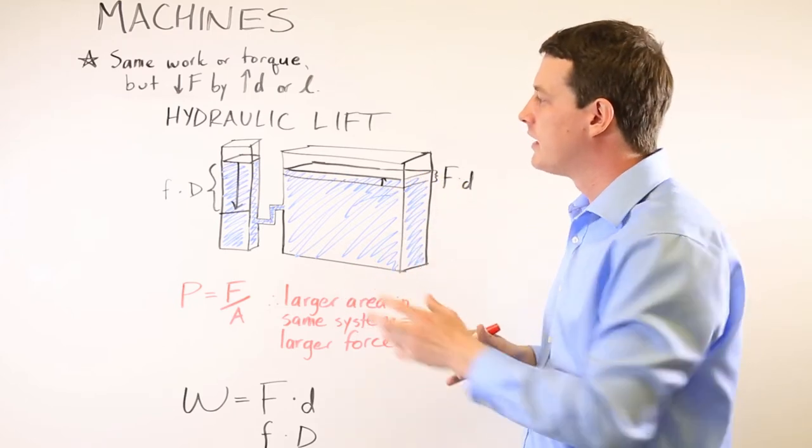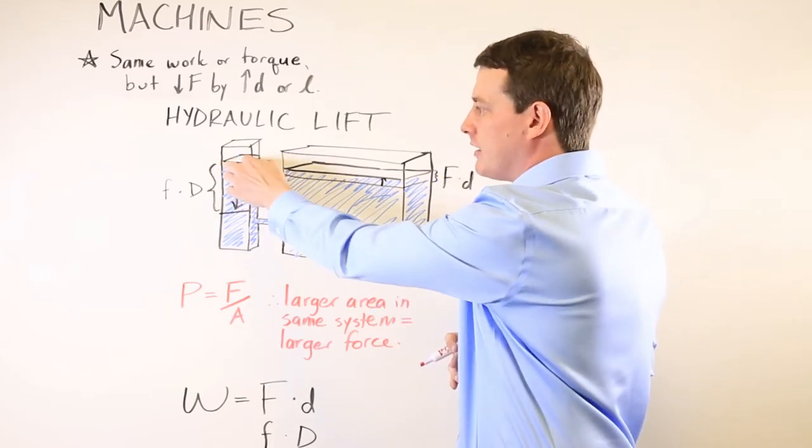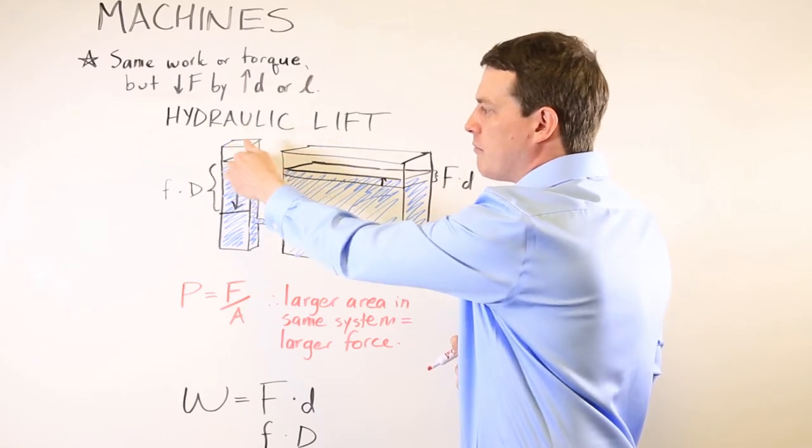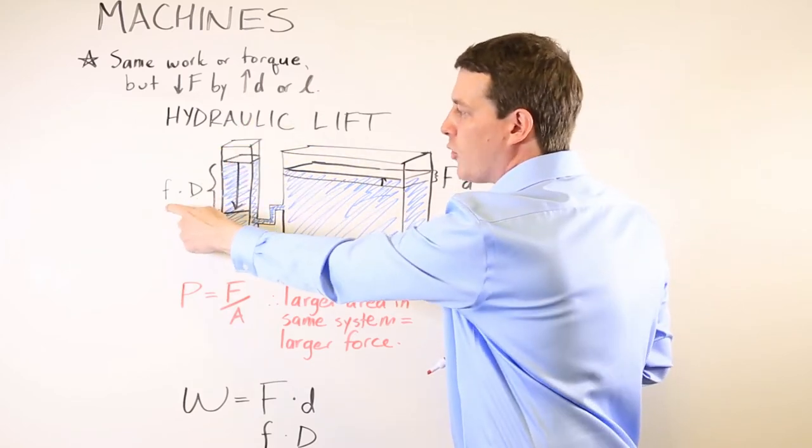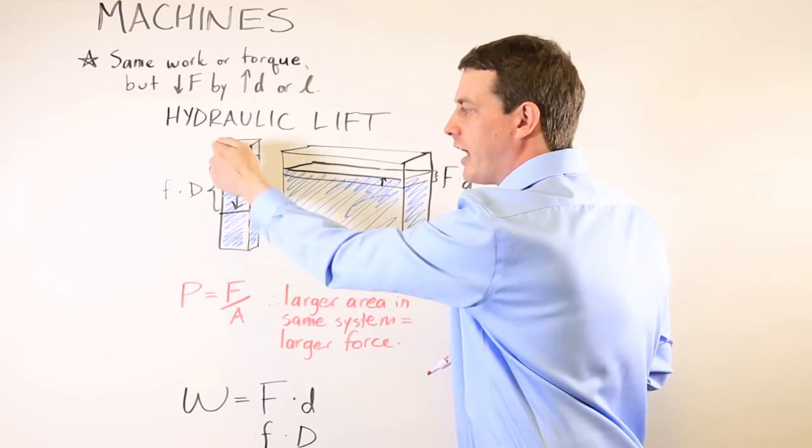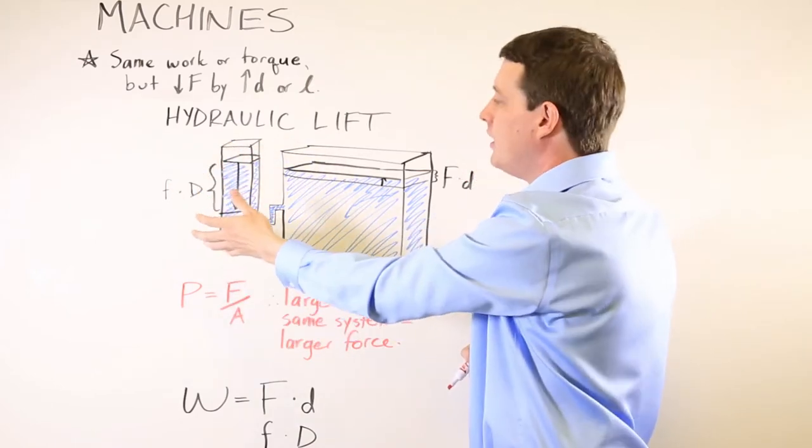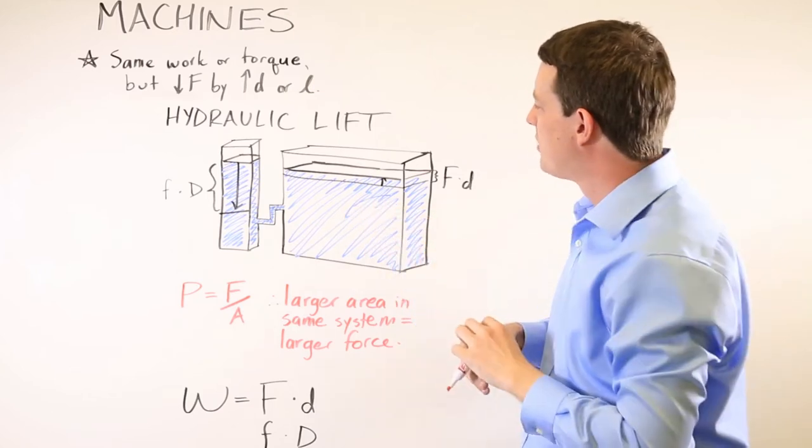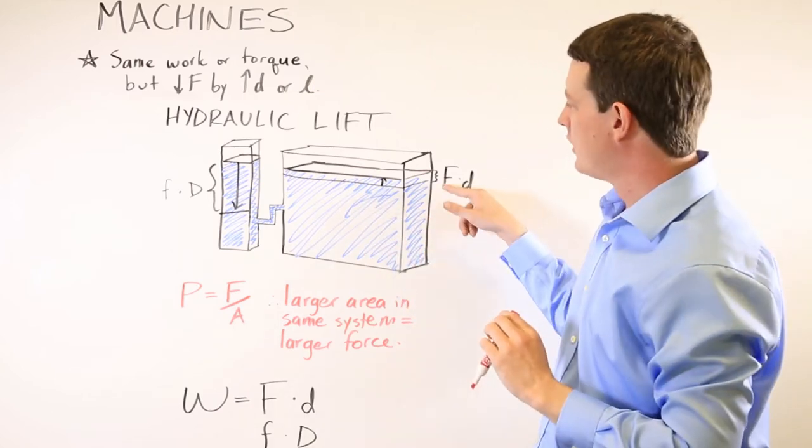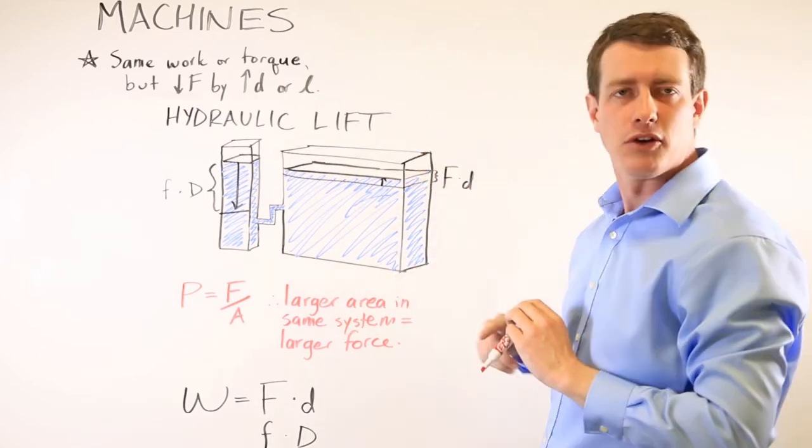The general principle is that on this smaller level, you're putting down a smaller amount of force, but you push it a larger distance. That causes a change in pressure that is then reflected by generating a large amount of force over a smaller distance.